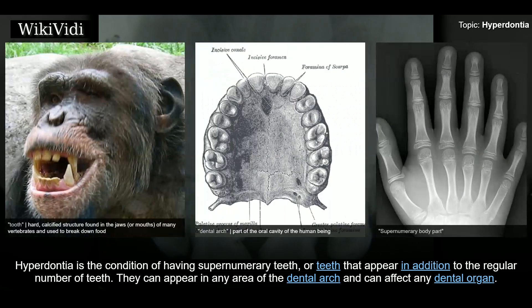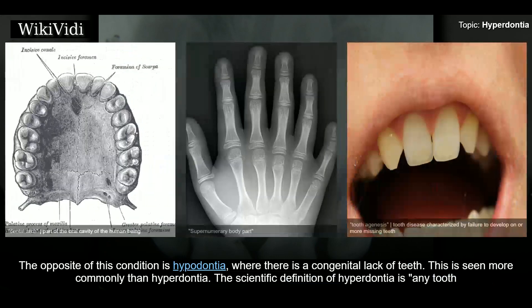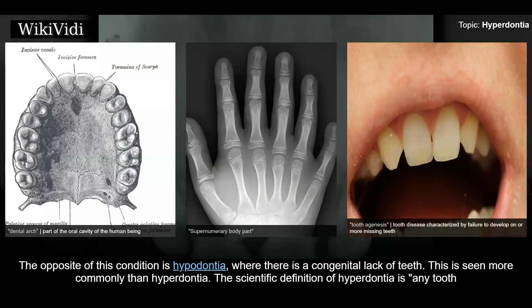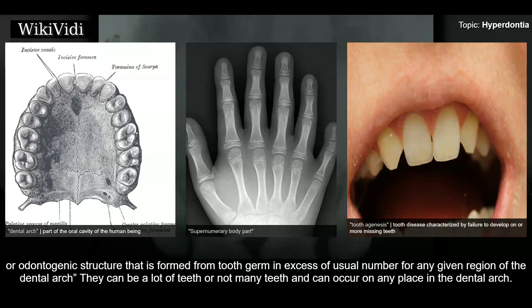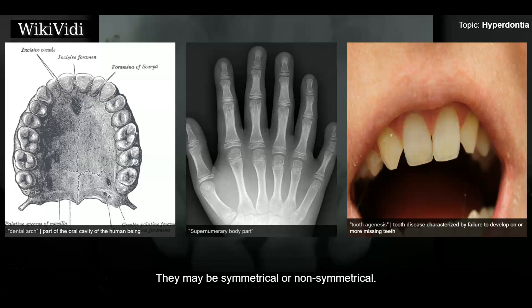Hypodontia is the condition of having supernumerary teeth, or teeth that appear in addition to the regular number of teeth. They can appear in any area of the dental arch and can affect any dental organ. The opposite of this condition is hypodontia, where there is a congenital lack of teeth. The scientific definition is: any tooth or odontogenic structure that is formed from tooth germ in excess of the usual number for any given region of the dental arch. They can be symmetrical or non-symmetrical.